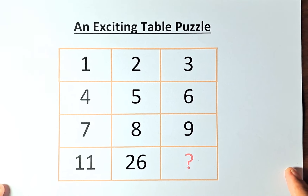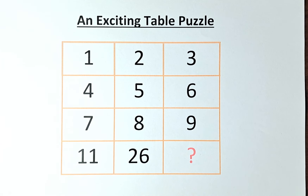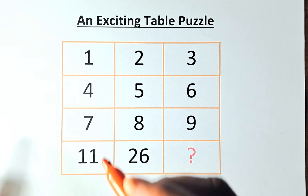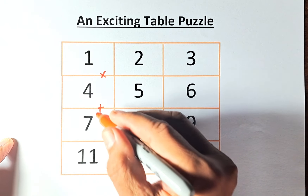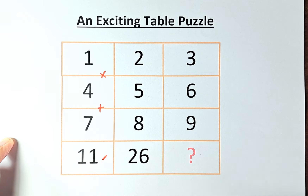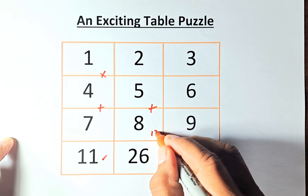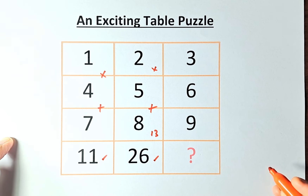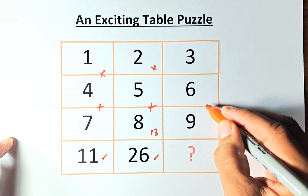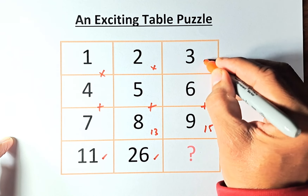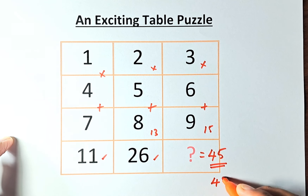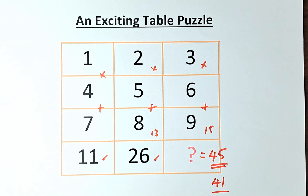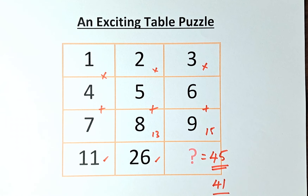The second solution works by columns using addition and multiplication. We add the numbers in the first two rows: 4 plus 7 is 11, then multiply by 1 — so 11 times 1 is 11. Similarly, 5 plus 8 is 13, and 13 multiplied by 2 gives us 26. So 6 plus 9 is 15, and 15 multiplied by 3 gives us 45 — that's the question mark. To recap: the first answer was 41 and the second answer is 45. If you got both, well done! See you in the next one. Subscribe for more puzzles. Cheers everyone and Happy Easter!